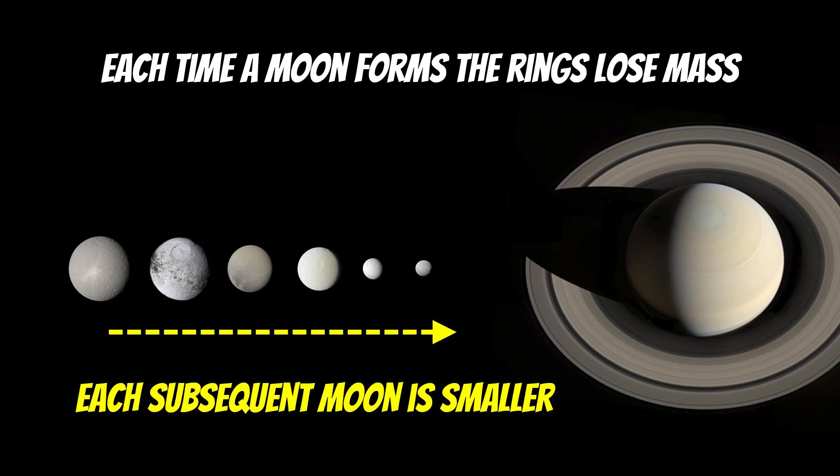Because of that, each new moon is slightly smaller than the one before it. When you have a look at the actual architecture or the configuration of these mid-sized moons, the further away they are, they're more massive, they're bigger, and they get smaller the closer you get to Saturn's rings. This is because they formed at the ring edge, and then moved away as the ring has got smaller each time.